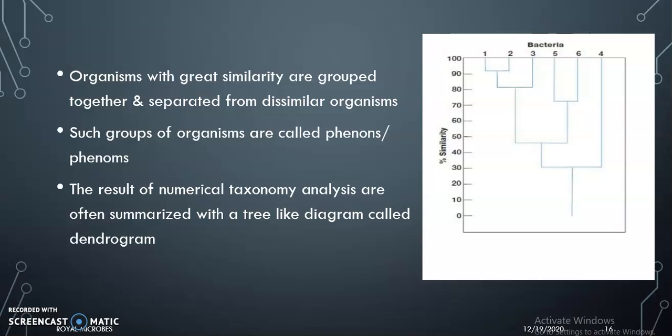After comparison, organisms with greater similarities are grouped together and separated from dissimilar organisms. Such groups of organisms are called phenons, and the result of numerical taxonomy analysis can be summarized in a tree-like diagram called a dendrogram.